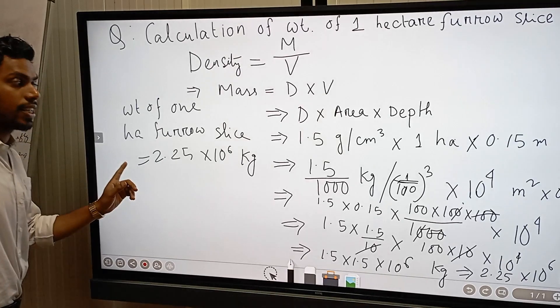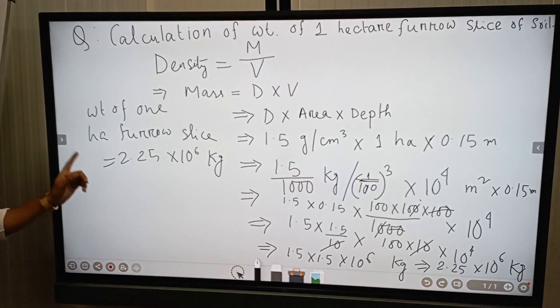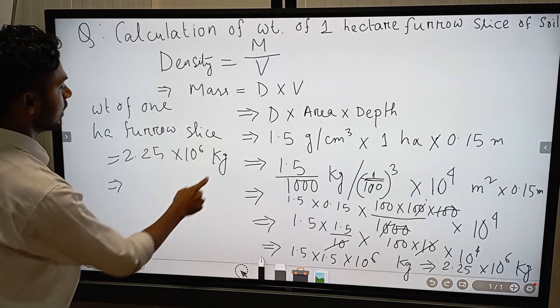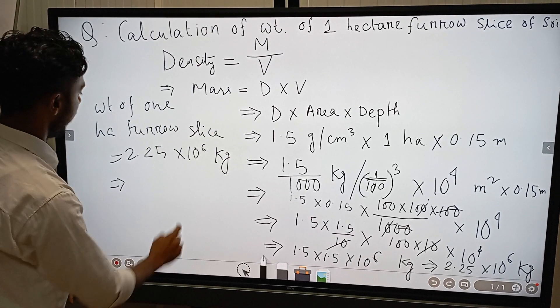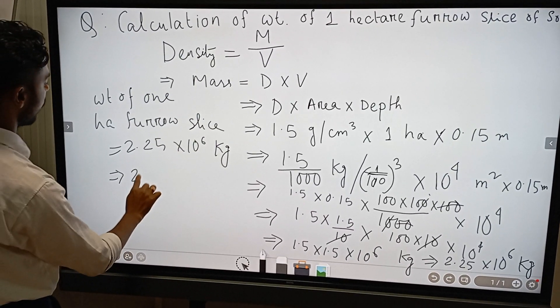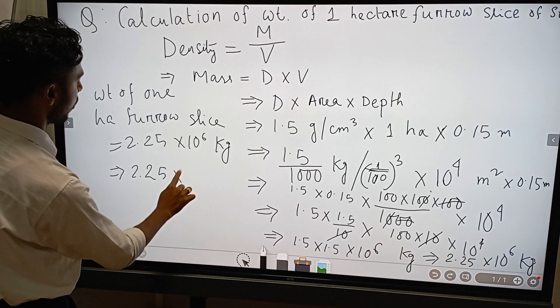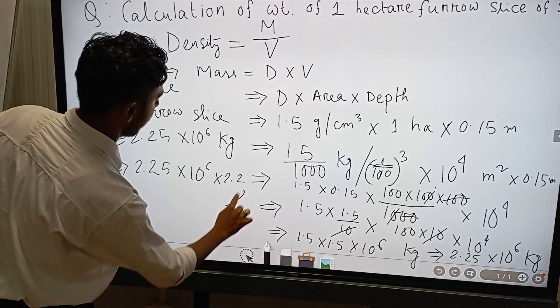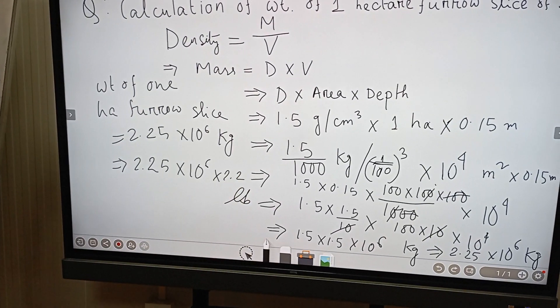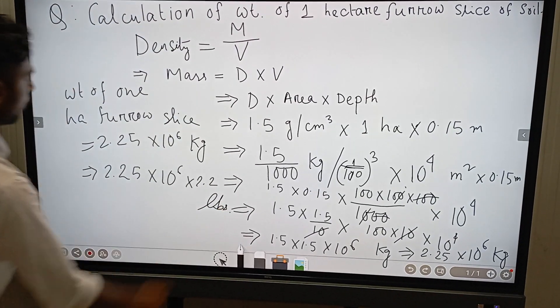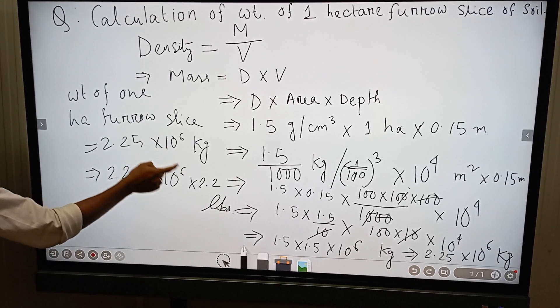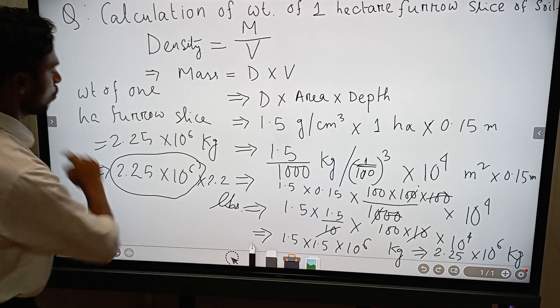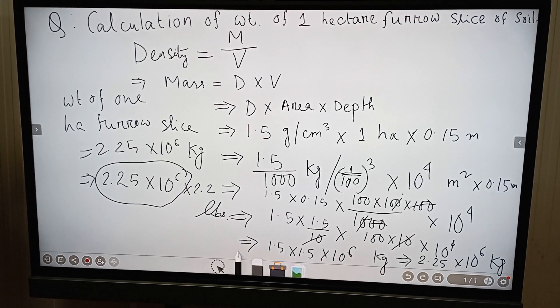And it will come in ICAR JRF exam. And if the unit should be converted again, that is from kg to pound, then you can multiply 2.25 times 10 to the power 6 times 2.2 pounds. So in MCQ options, weight of 1 hectare of furrow slice is 2.25 times 10 to the power 6 kg.